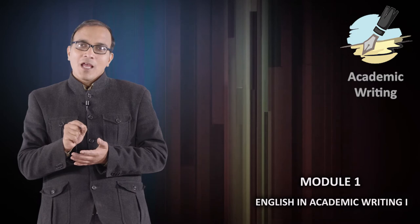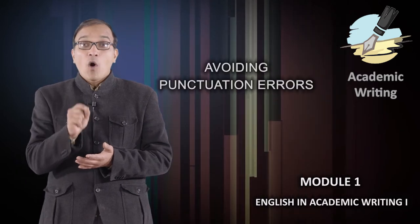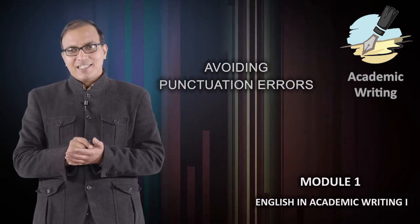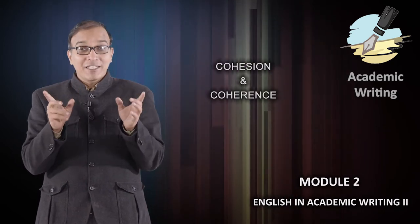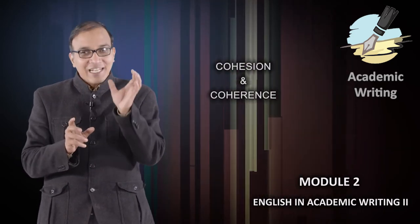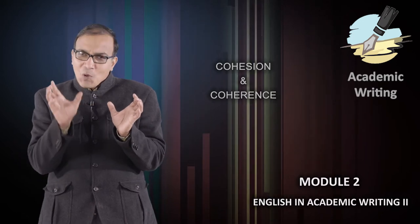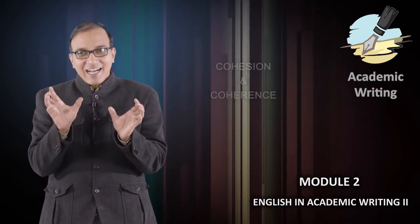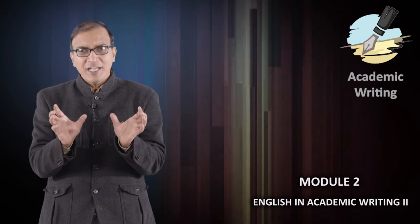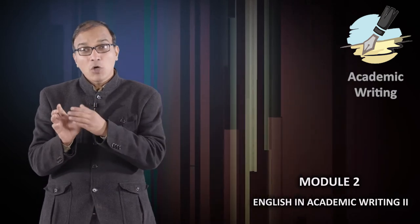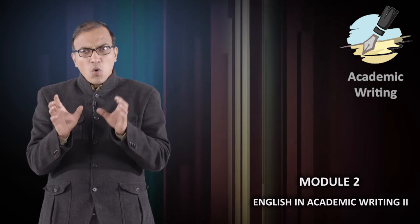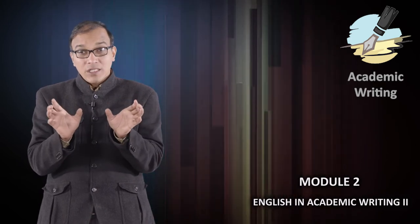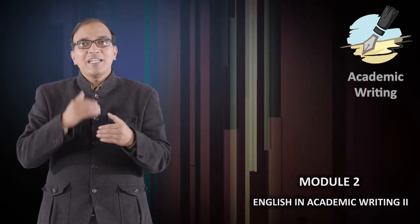Then we learned about avoiding punctuation errors. In Module 2, we talked about cohesion and coherence. Remember, cohesion is about the grammatical aspect and coherence is about the idea aspect - the rhetorical aspect in which we're talking about the technical aspect of our manuscript.